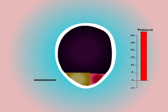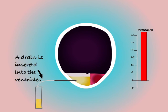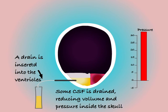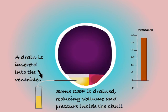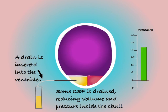One possible solution could be to drain away some of the CSF. A surgeon can insert a drain straight into the ventricles. Reducing the volume of CSF will give the brain space to swell into, hopefully reducing pressures back to within safe limits.